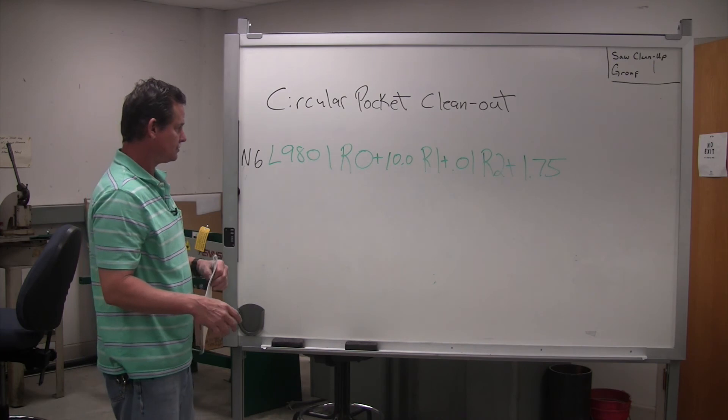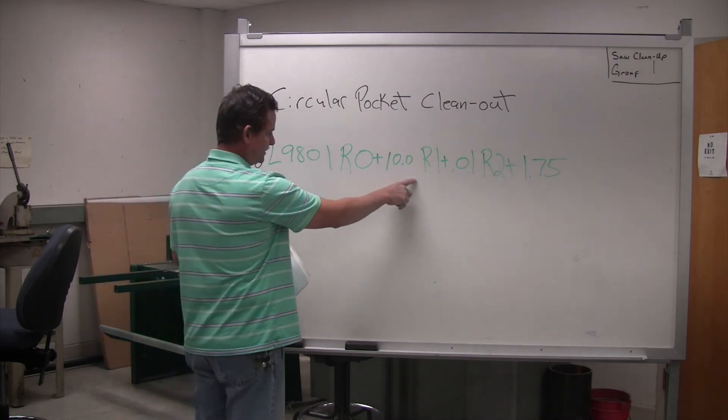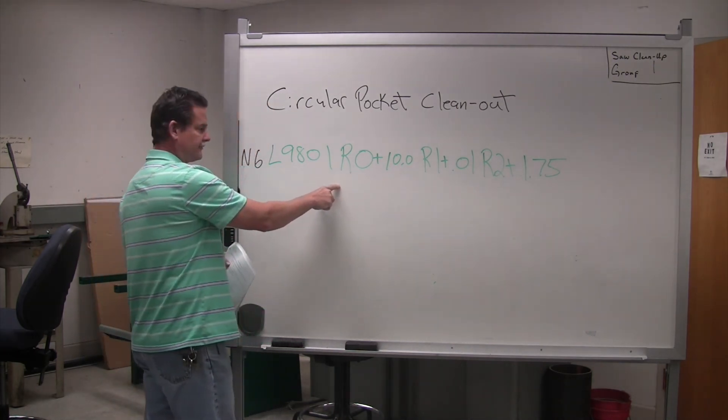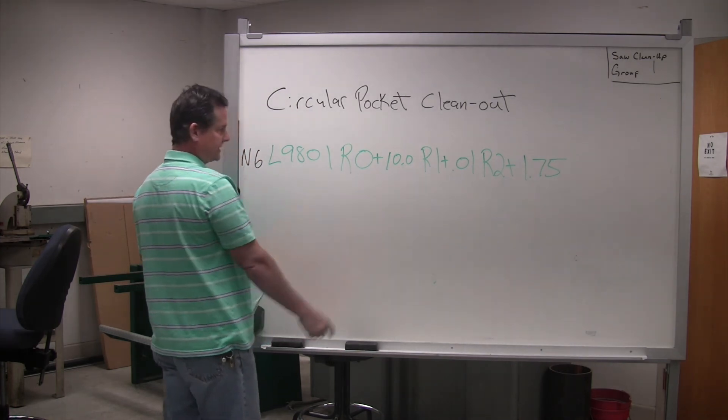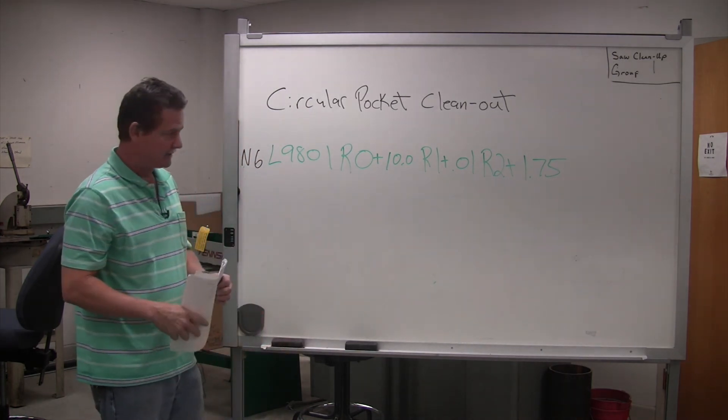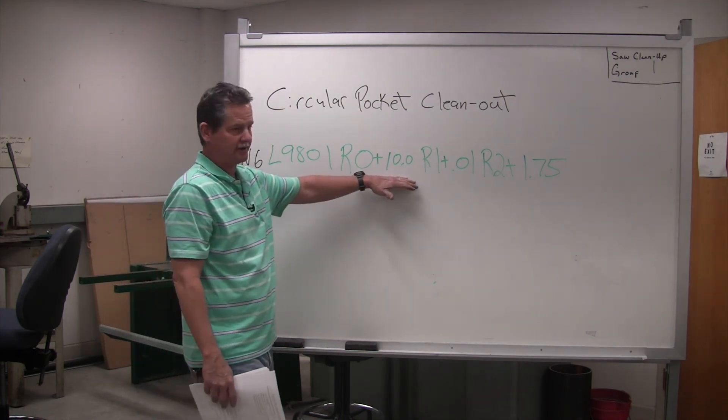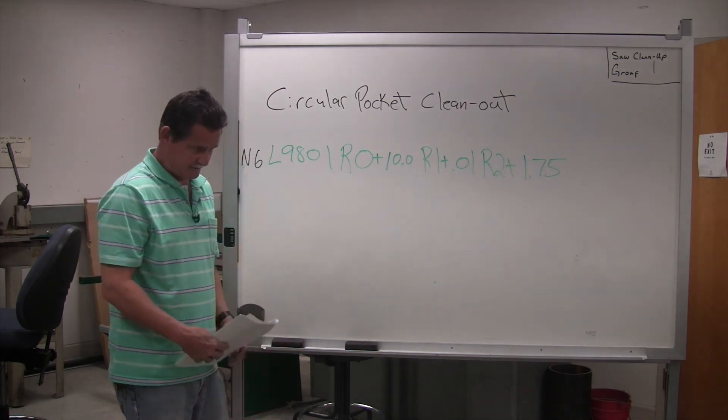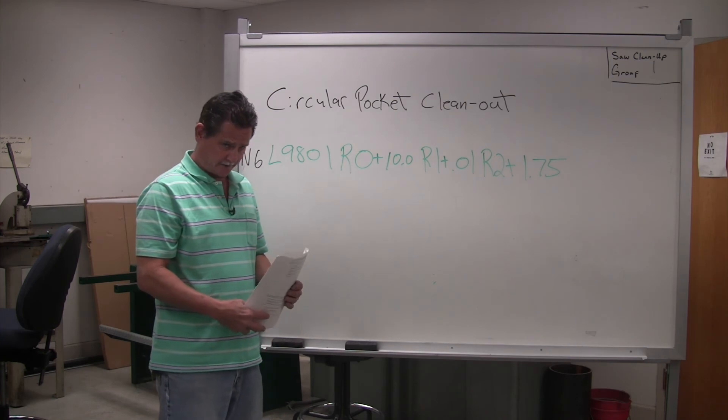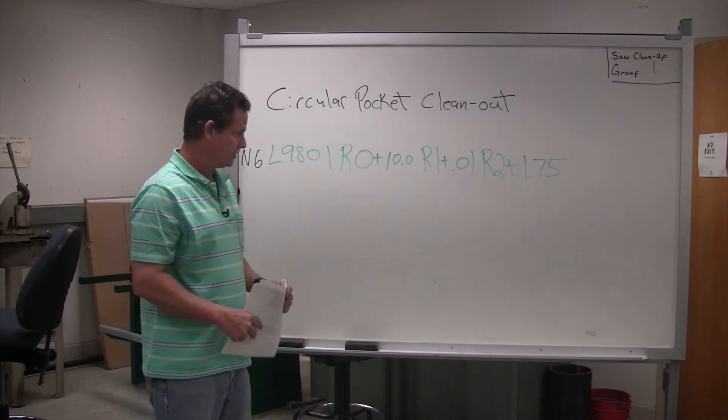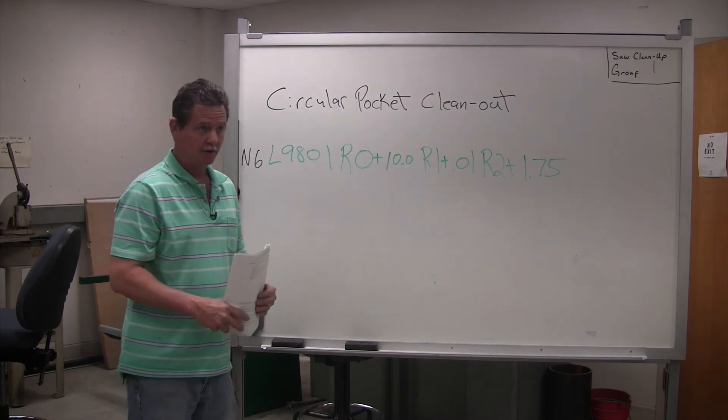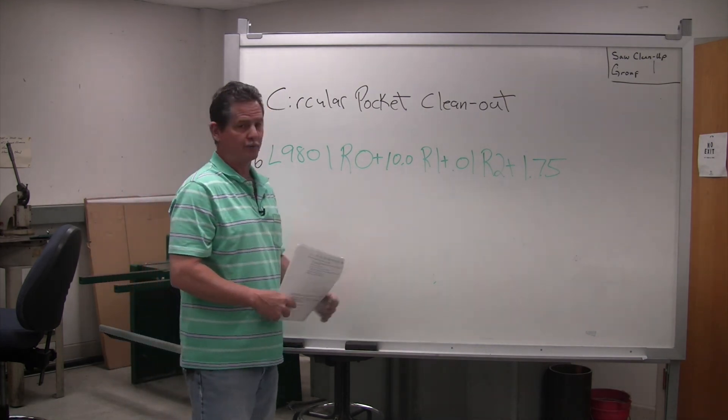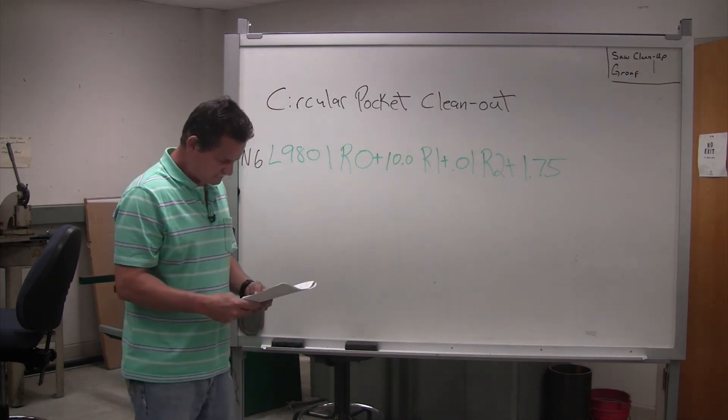Your R0 right here is the feed rate. Your feed rate. So at R0, you would plug in whatever your feed rate may be. Now in this instance, we've got 10 inches a minute. That's pretty fast. That's an aluminum type feed rate. Aluminum or the blue wax that you use from time to time to do your parts. That would be an appropriate feed rate for that.